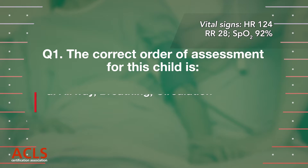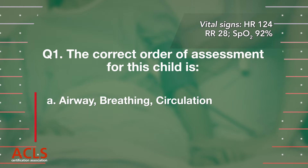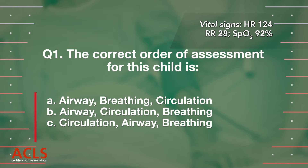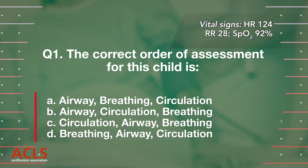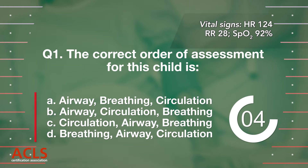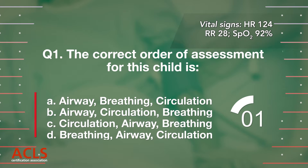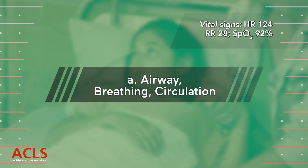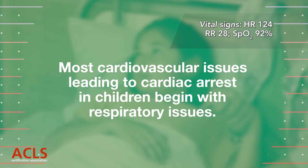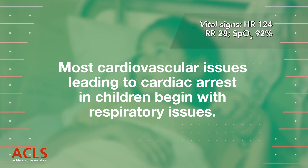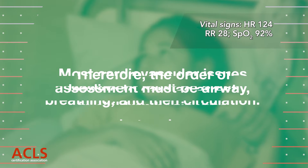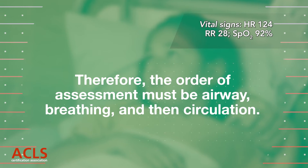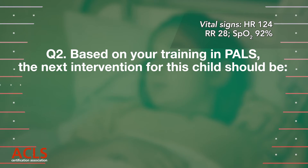Question 1: The correct order of assessment for this child is: A) Airway, Breathing, Circulation; B) Airway, Circulation, Breathing; C) Circulation, Airway, Breathing; D) Breathing, Airway, Circulation. Correct answer A — Airway, Breathing, Circulation. Most cardiovascular issues leading to cardiac arrest in children begin with respiratory issues, therefore the order of assessment must be airway, breathing, and then circulation.